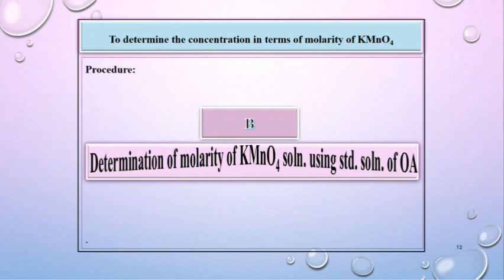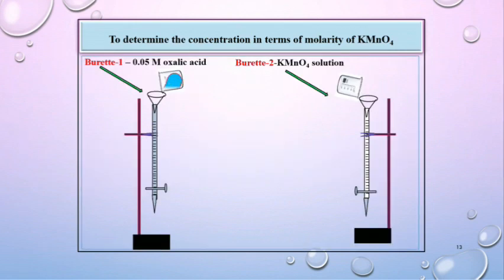Part B: determination of molarity of KMnO₄ solution using standard solution of oxalic acid. Now fill the burette number 1 with 0.05 molar oxalic acid solution and burette number 2 with KMnO₄ solution.